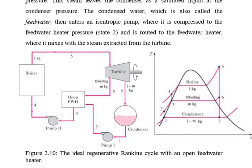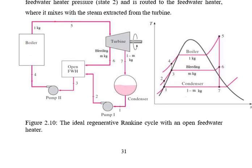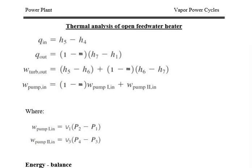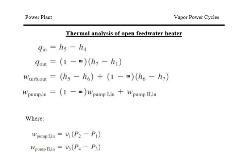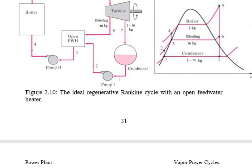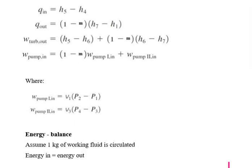The turbine is the center point. Heat is extracted from the turbine and ejected to the condenser. For the thermal analysis of the open feed water heater: Q_in is the heat added, equal to H5 minus H4. That is where the heat addition takes place in this section.